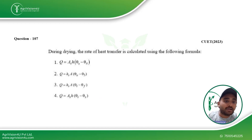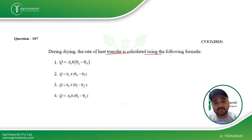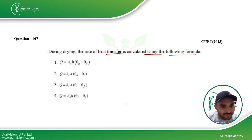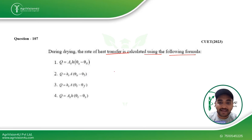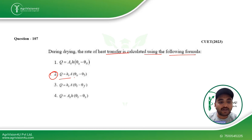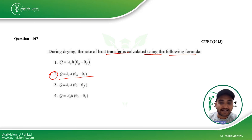The next question asks which formula is used to calculate the rate of heat transfer during drying. The options are quite similar, so only someone thorough with the formula can identify the correct one. The correct formula is Q = hSA(θa − θs), which is Option 2 — the right answer for this question.